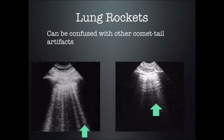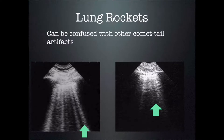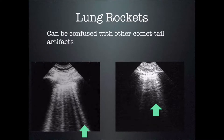There are other vertical lines that can be seen in thoracic ultrasound and they can be confused with lung rockets or comet tail artifact. For it to be a comet tail artifact, the lines must go all the way off the screen. If you get ill-defined vertical lines that do not go off the screen, then it is not a comet tail artifact.